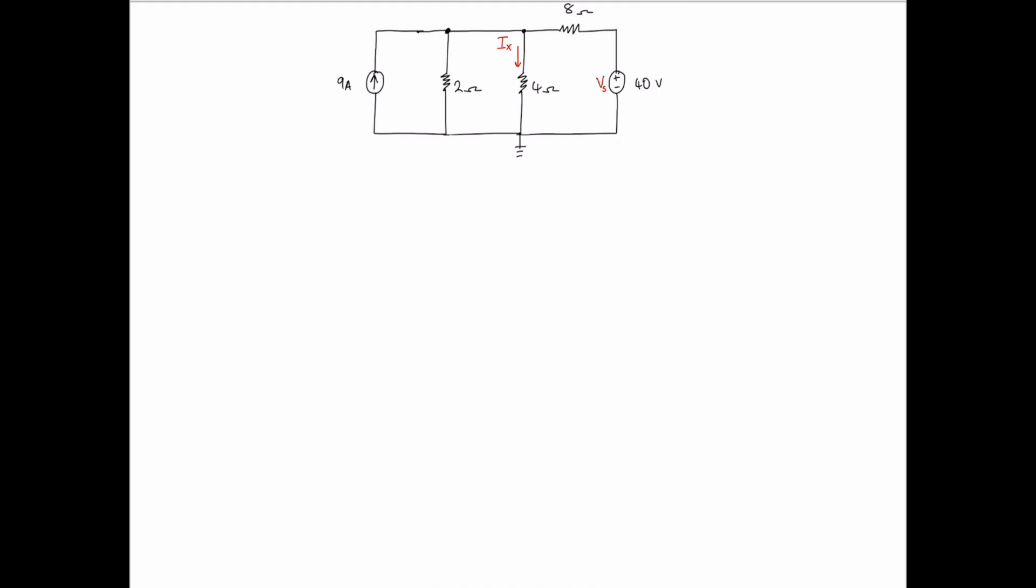As always, we choose our terminal and apply KCL. We call that a node. And we always choose the terminal that connects the most components. In this case, note that if we call this terminal VA and we call this one VB,